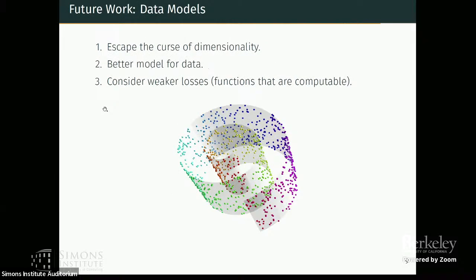The other big question here that is relevant to this semester as well is how can we escape this curse of dimensionality? What are the right assumptions on the data so that we can get away with not having exponentially many samples, so exponential in the dimension?